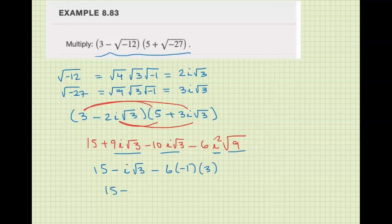So 15 minus i square root of 3 plus 18, which is basically 33 minus i square root of 3. There we go.